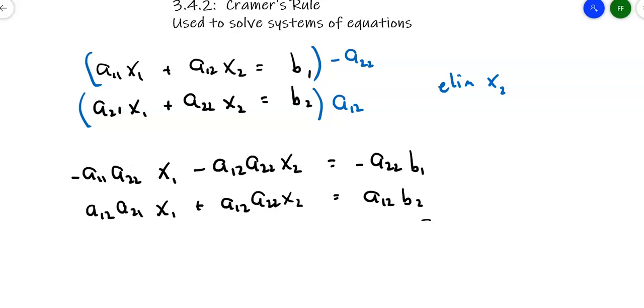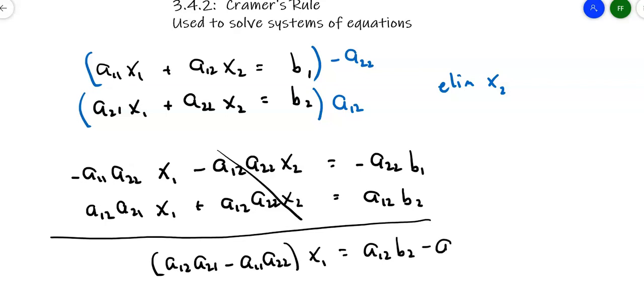Well, if there's any relief here, the second terms drop out, right? These middle terms here are both a12a22x2 with different signs. So they go away. When I add those terms together here, I'm going to get a12a21 minus a11a22x sub 1. When I add these terms here, I'll get a12b2 minus a22b1. So it doesn't look like a whole lot simplifies.